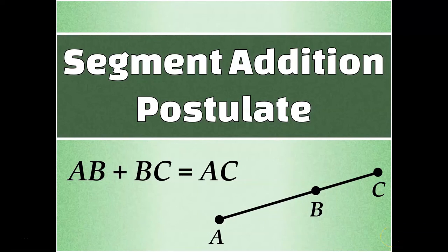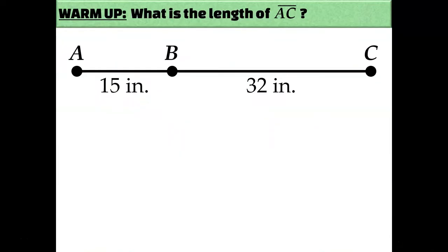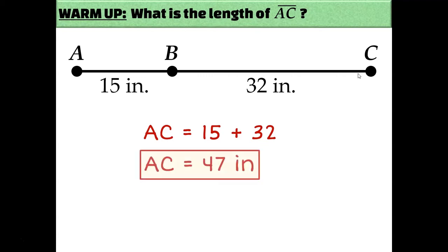Let's talk about the segment addition postulate. We're going to start out with a warm-up that hopefully is pretty easy. In this diagram I see three segments: segment AB, which is 15 inches long, and segment BC, which is 32 inches long. And the question is, what is the length of segment AC? If you guessed that the answer was 47 inches, you're correct, because to get to the total length of AC, you would add up the two smaller segments.